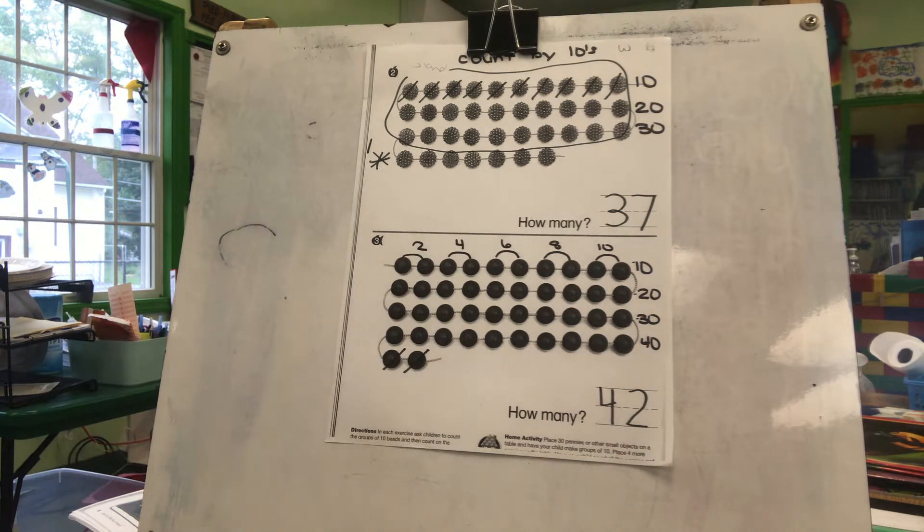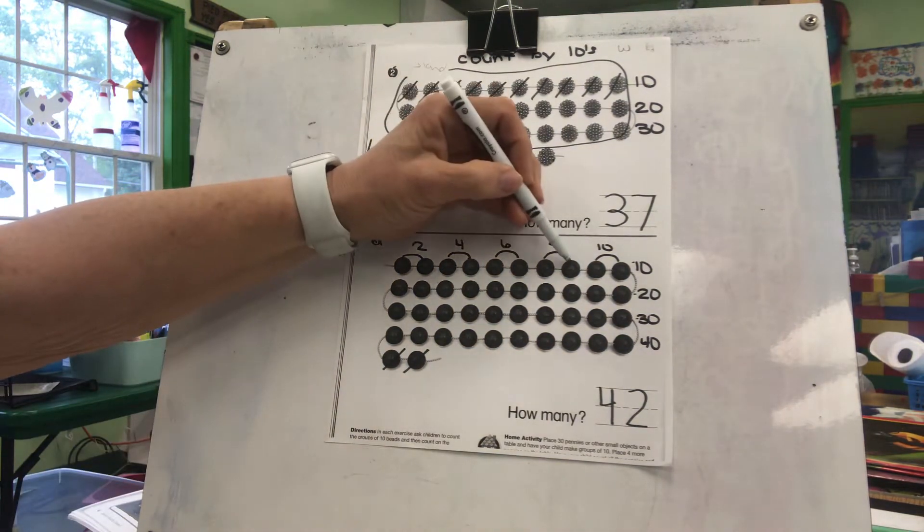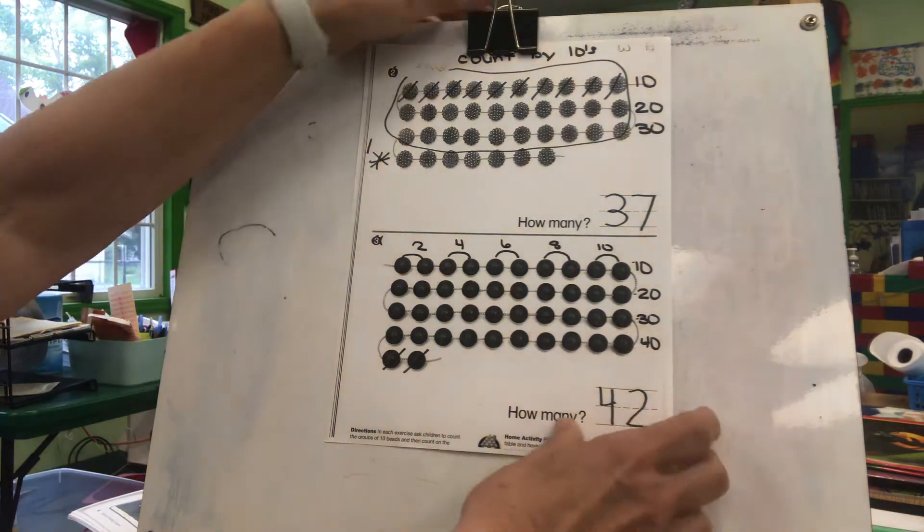You could count by twos, that will do. Two, four, six, eight, ten. That's another good way to check it again. All right, let's see what's happening on the next page.